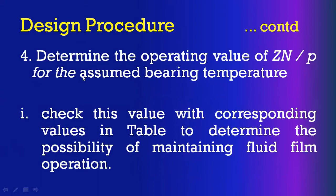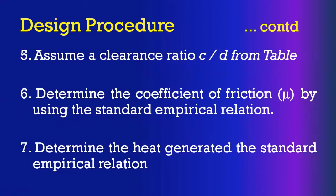The fourth step: once the lubricant is selected, determine the operating value of ZN/P — the bearing characteristic number. Calculate the bearing modulus and compare it with the operating value of ZN/P to check whether the bearing operates under hydrodynamic conditions. Check ZN/P to determine the possibility of maintaining a thick film of lubrication between the journal and the bearing.